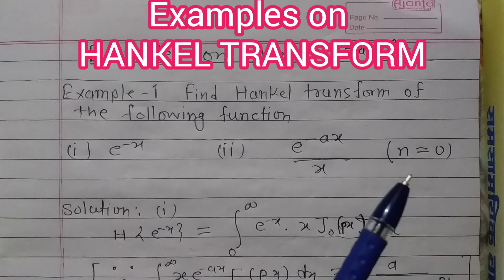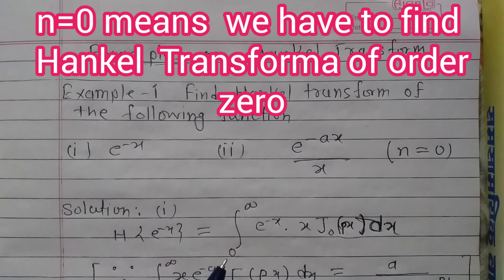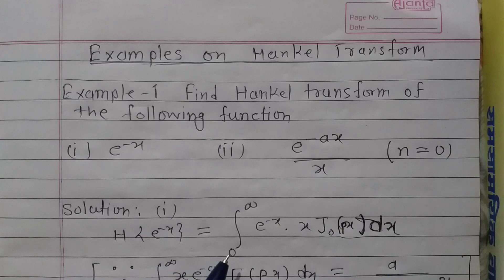For n equals to 0, we have to consider the Henkel transform of order 0. Let us solve the first problem: the Henkel transform of e to the power minus x. By definition, it will be the integration over the interval 0 to infinity of e to the power minus x into x J₀(px).